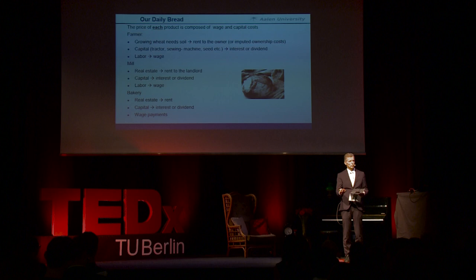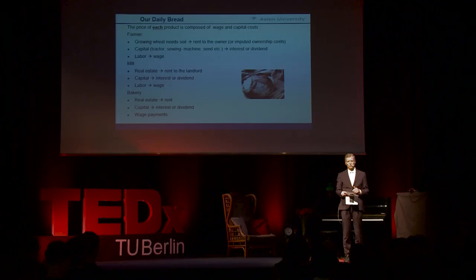Let's take the farmer. He needs soil to grow the golden grain. Either he can rent the soil from a landlord and has to pay the rent, or he can buy the land by taking out a loan from a bank and pay interest, or he owns the land himself. But even then, he has to calculate so-called imputed ownership costs, because he could rent out the land or sell it. So whoever owns the land, you have to pay rent for just using it.